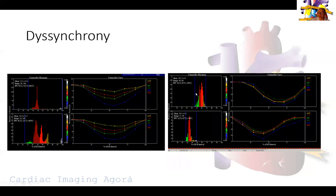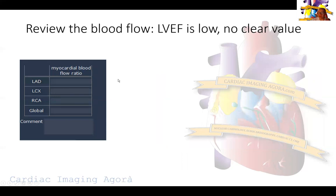Next we look at synchrony. On the right hand side I always put an example of a normal synchronous ventricle from a different patient. On the left you can see how dyssynchronous this ventricle is at both rest and stress — the segments are not contracting in harmony and not reaching peak contractility at the same time or to the same extent. We define a standard deviation above 8 as indicating dyssynchrony. This patient shows a standard deviation of 12 and 13 post-stress. We do not calculate blood flow in patients with low ejection fraction as the specificity is unclear.